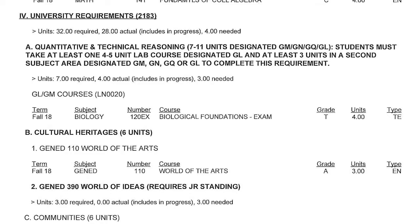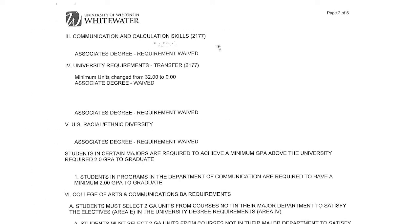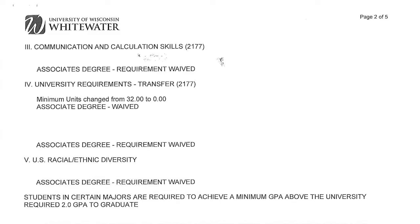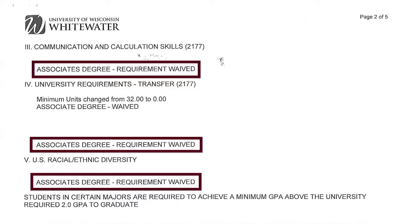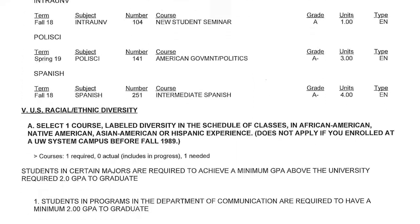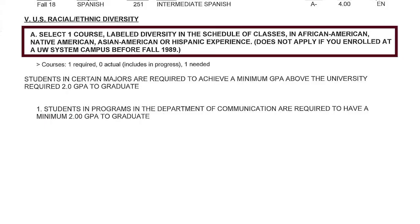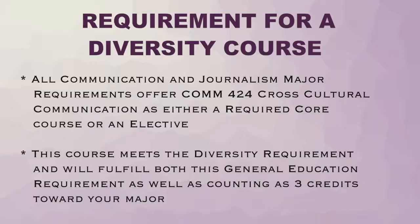If you earned an associate's degree, the things we've talked about so far probably haven't appeared on your AAR. Instead, you likely have a statement indicating you may still need to complete the diversity requirement and will need to complete the college requirements we are about to discuss. The diversity course requirement can be met by taking a wide range of courses that focus on the experience of a particular ethnic group, designated DV. All communication and journalism major requirements offer COM 424, Cross-Cultural Communication, as either a required core course or elective. This course meets the diversity requirement and counts as three credits toward your major.